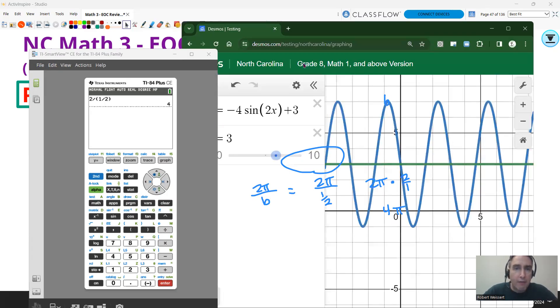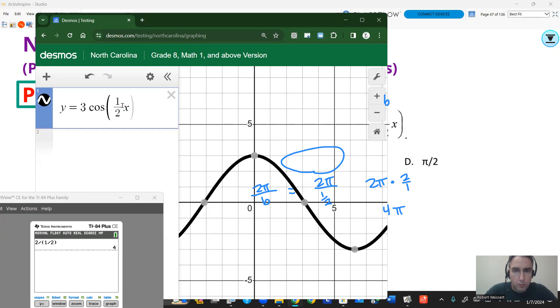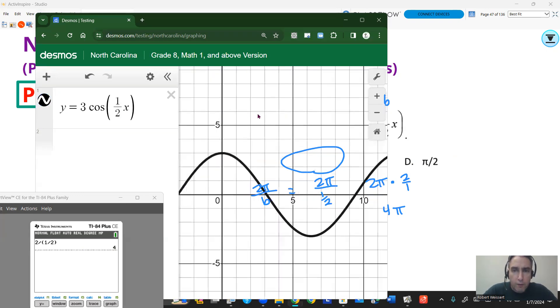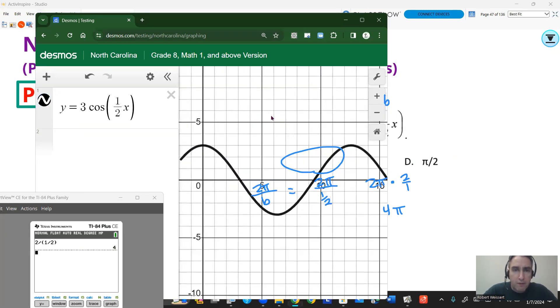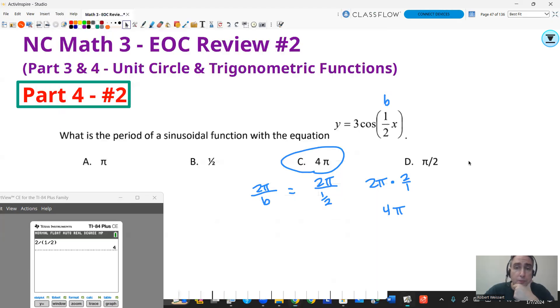Or you can graph the thing, 3·cos(1/2·x). And for a cosine function, you get kind of lucky because the cosine starts here at the y-axis. So if you go over to the next peak, 4π is going to be your period. So you can get it that way too.